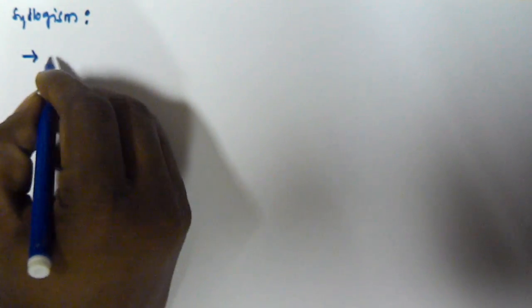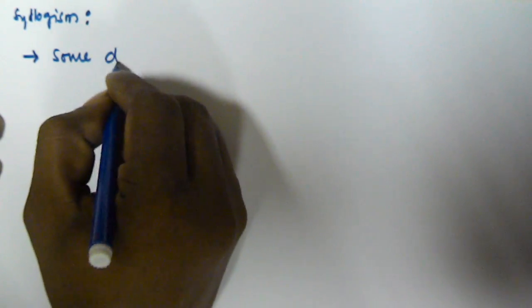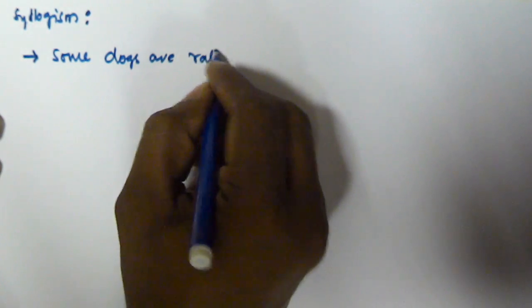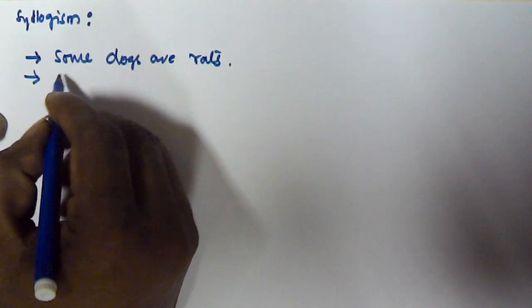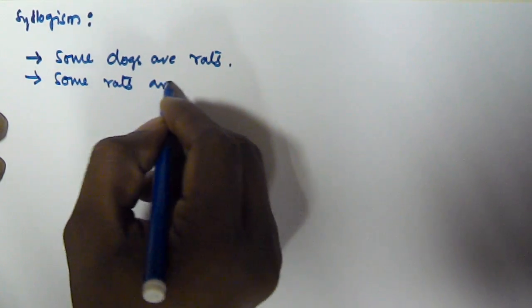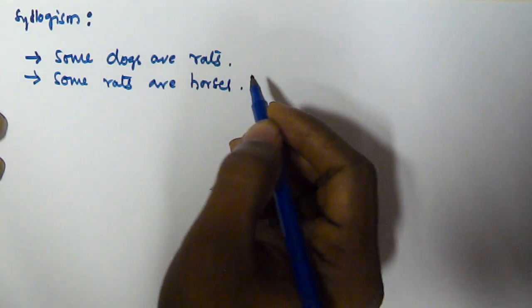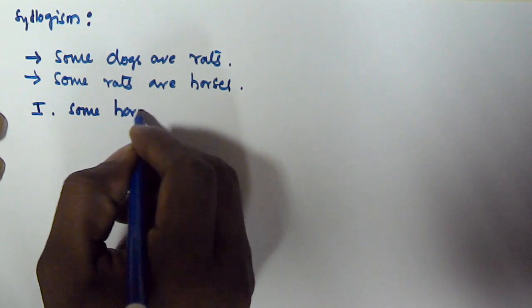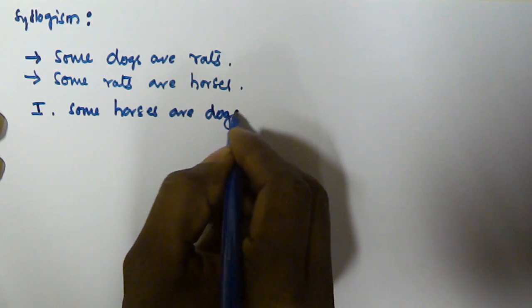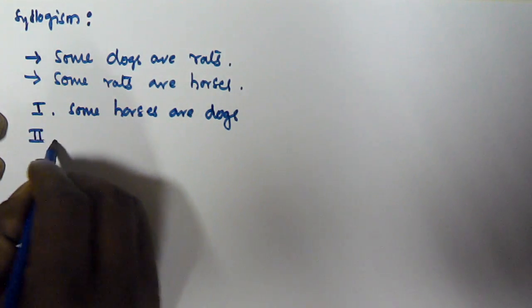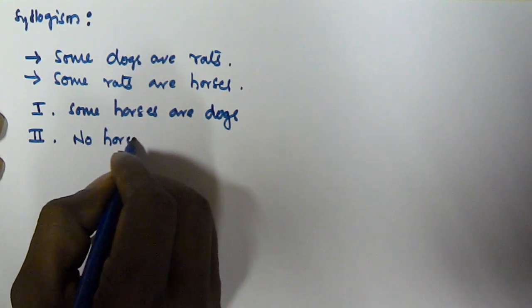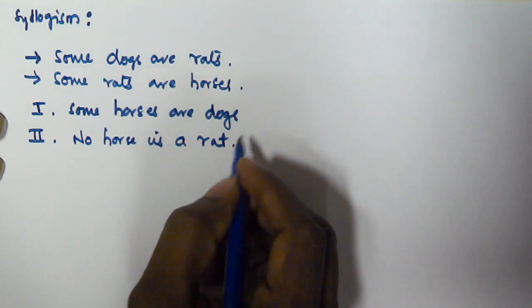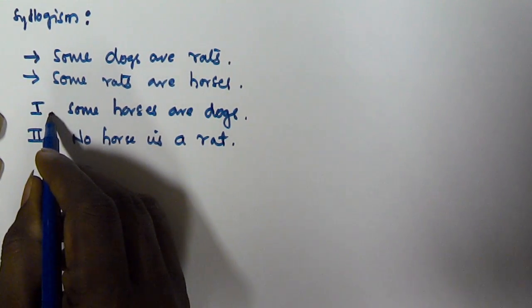Hello friends. In this video we will see another problem based on syllogism. The first statement given is: some dogs are rats. The second statement given is: some rats are horses. The first conclusion given is: some horses are dogs. The second conclusion given is: no horse is a rat.